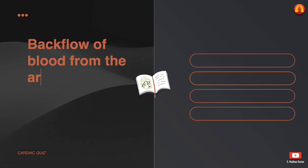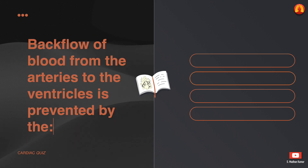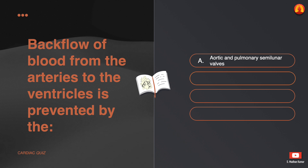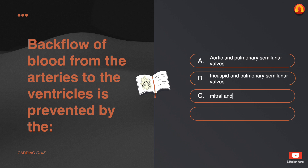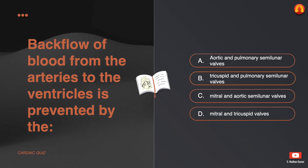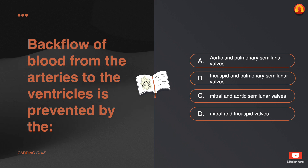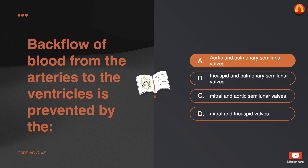Backflow of blood from the arteries to the ventricles is prevented by the: A. Aortic and pulmonary semilunar valves. B. Tricuspid and pulmonary semilunar valves. C. Mitral and aortic semilunar valves. D. Mitral and tricuspid valves. The correct answer is: aortic and pulmonary semilunar valves.